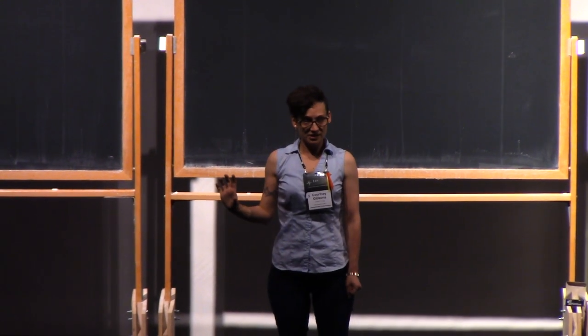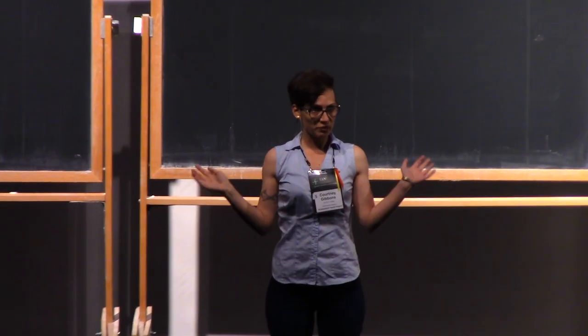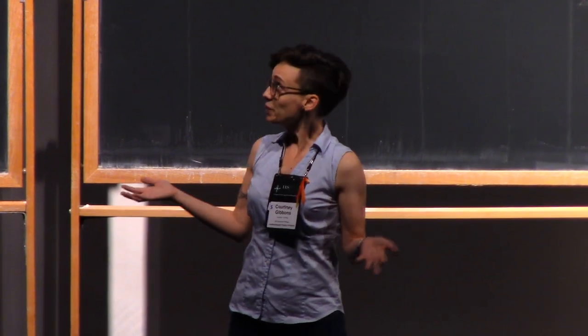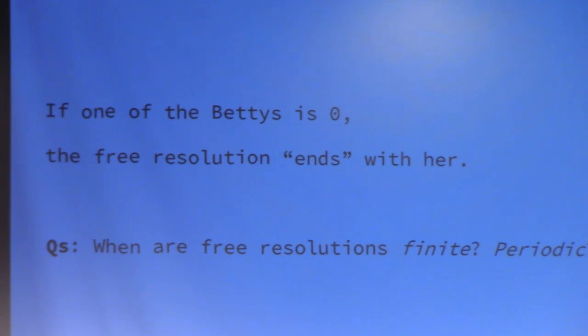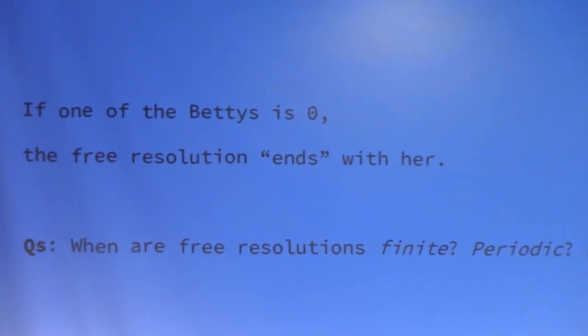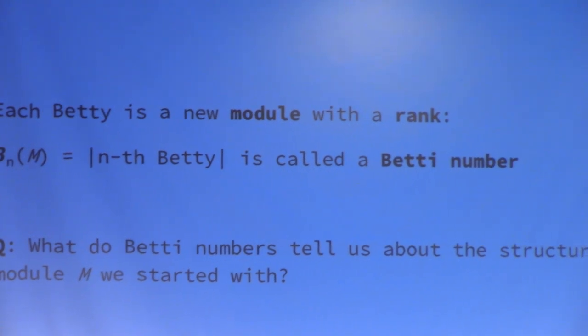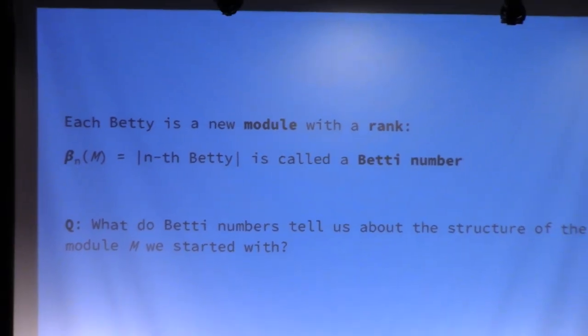Now if one of the Bettys is zero, we're in a great spot. That means there are no more relations, and our free resolution stops. But you could start asking questions like, when do free resolutions stop? When are they periodic? When do the same Bettys keep appearing? Are they predictable at some point? And these are some of the big open questions in commutative homological algebra right now. They're really about asymptotics of these Bettys.